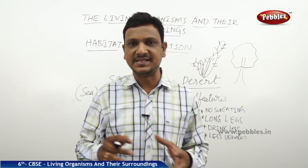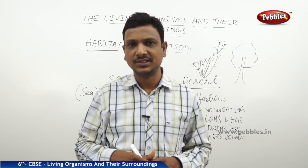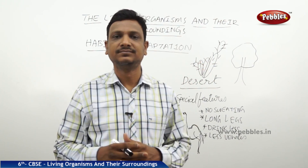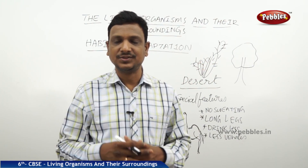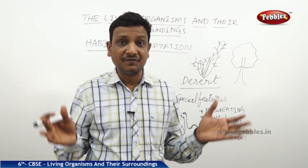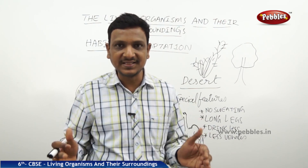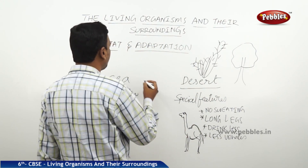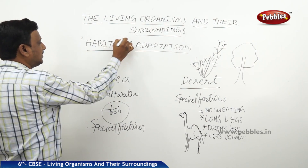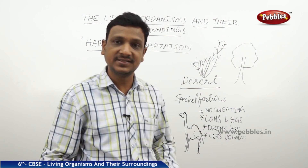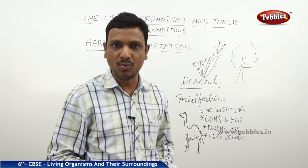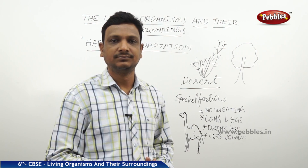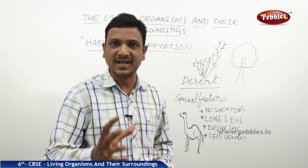Our point here is that living organisms can live in any condition, any kind of environment. Organisms live in a particular place, and that particular place is the habitat of that organism. So the camel is living in the desert - the desert is the habitat of the camel. Here we have come to the word habitat.